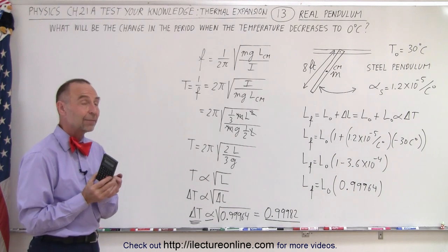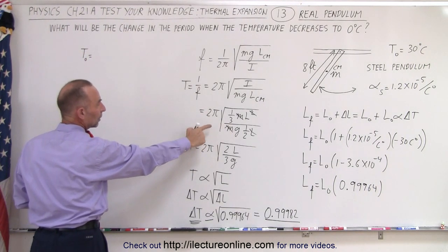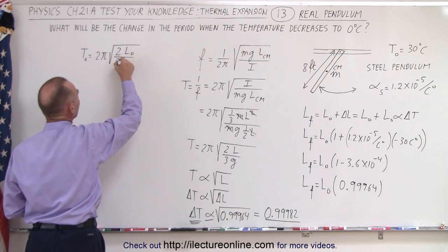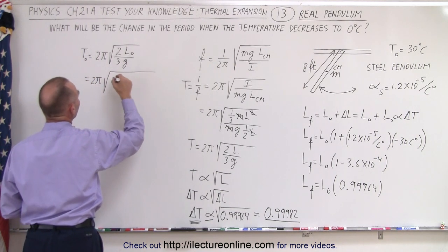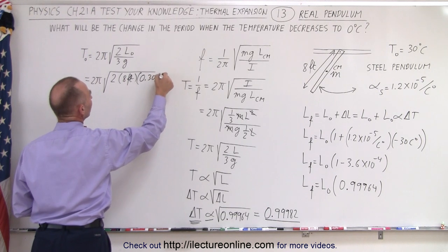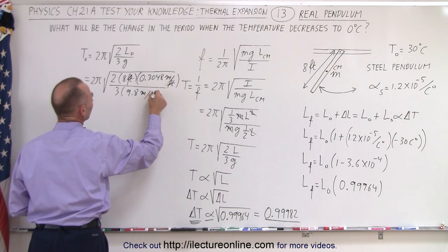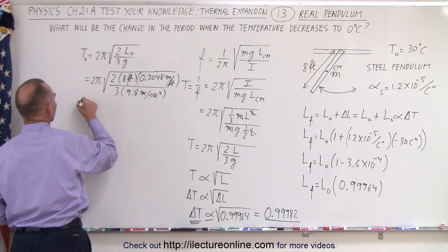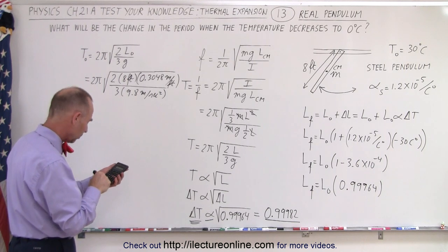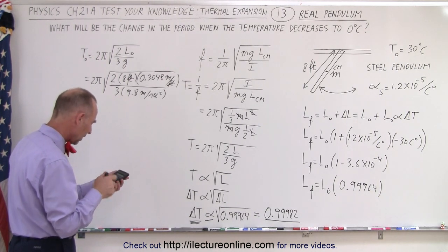Now we need to see how much the time changes, so let's figure out the initial period. The initial period equals 2π times the square root of 2 times the original length divided by 3G. That would be 2π times the square root of 2 times 8 feet. We have to convert that to meters, which is 0.3048 meters per foot, divided by 3 times G, which is 9.8 meters per second squared. On the calculator: 16 times 0.3048, divided by 3, divided by 9.8, take the square root, multiply by 2 and by π.